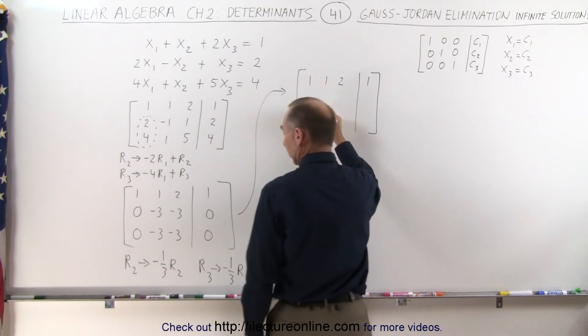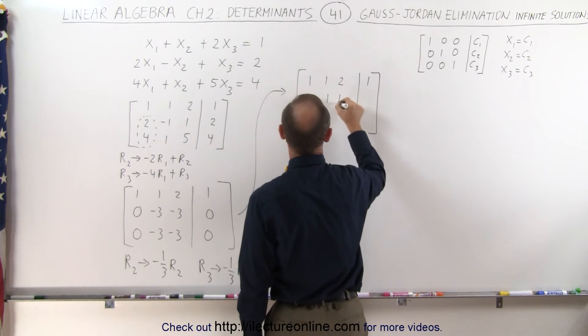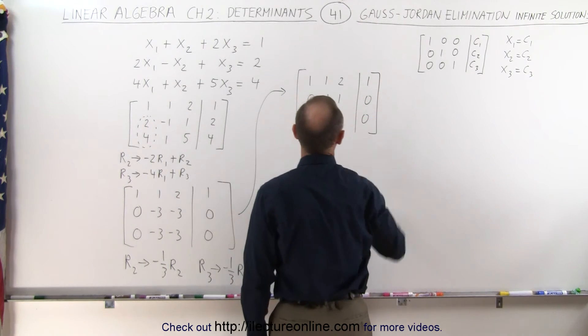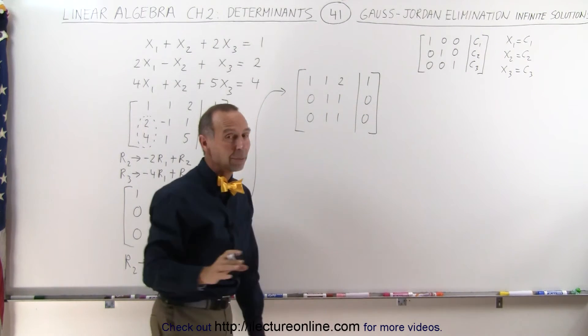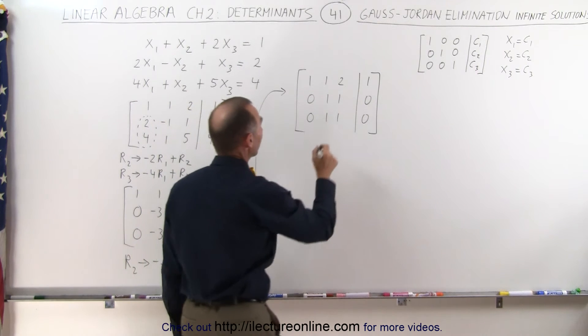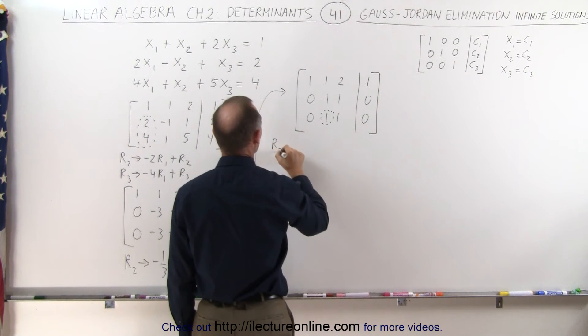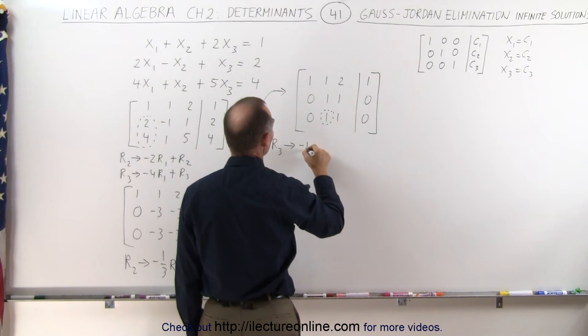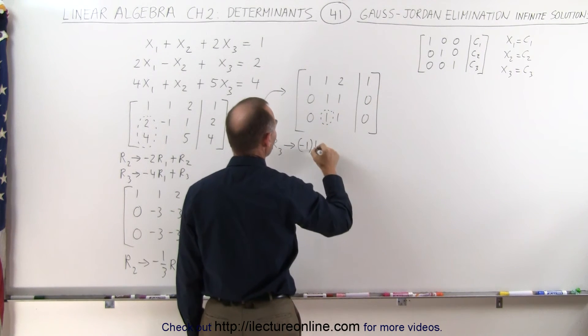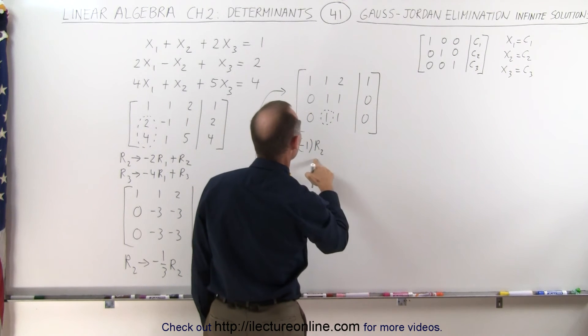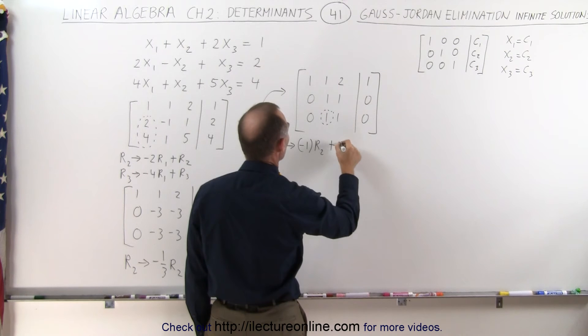So when you do that, the second row becomes 0, 1, 1, 0. The third row becomes 0, 1, 1, 0. And finally, to show you that we don't have a unique solution, we're going to try and eliminate this right here by taking the third row and replacing it by the negative of that number, multiply times the second row, the one with the 1 in it, and adding it to the third row.